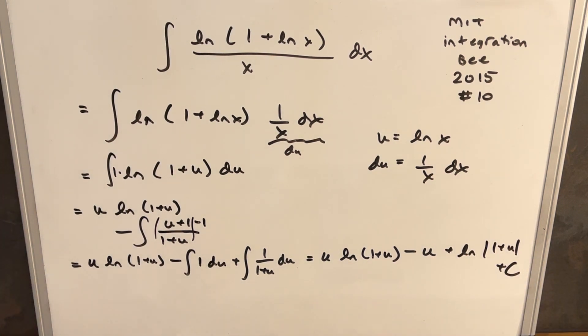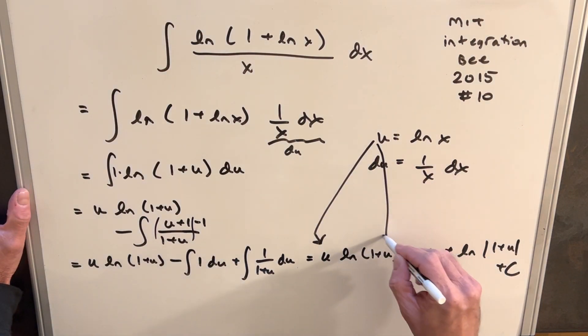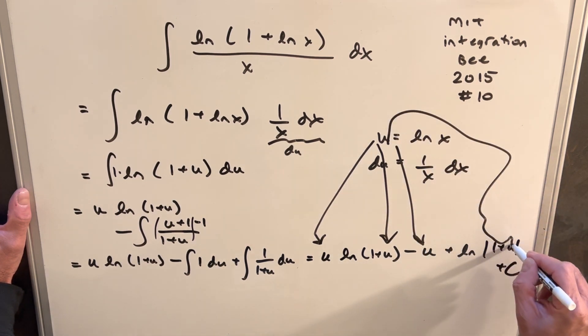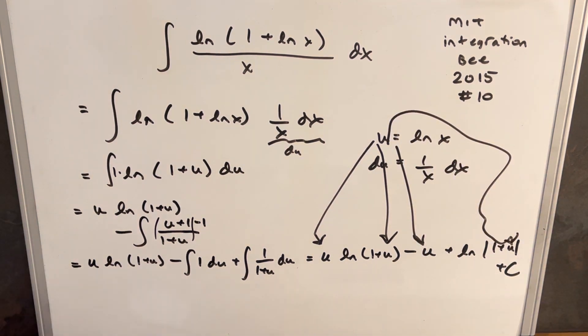Plus c. Then from here, all we need to do is back substitute with our u in here, here, here, and here. So for our final answer, we're going to have ln x times ln of 1 plus ln x minus another ln x.